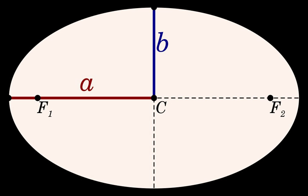In astrodynamics, the orbital period T of a small body orbiting a central body in a circular or elliptical orbit is T = 2π√(a³/μ), where a is the length of the orbit's semi-major axis, and μ is the standard gravitational parameter of the central body. Note that for all ellipses with a given semi-major axis, the orbital period is the same, disregarding their eccentricity.